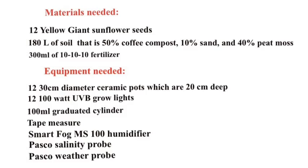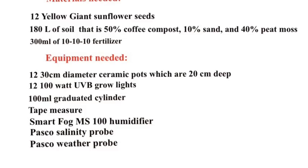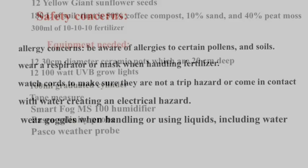But that's not all you need. Once you have descriptions of your control group and experimental group, you also need a materials list — things that get used up, like sunflower seeds, soil, and fertilizer, which we won't be able to reuse. Equipment needed are things we can use over and over again: ceramic pots, grow lights, humidifiers, tape measures, and salinity probes. We need a list of both.